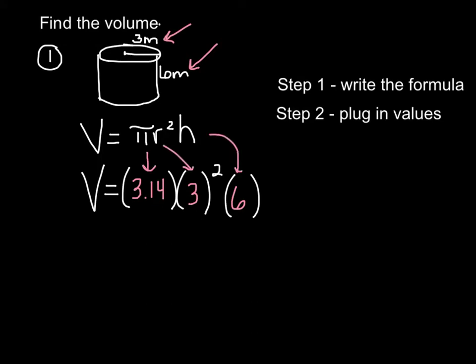So now you follow order of operations. You solve. So V equals 3.14. 3 squared is 9. You have to follow order of operations. You do not multiply first. You take care of the power. And now all you do is multiply 3.14 times 9 times 6.